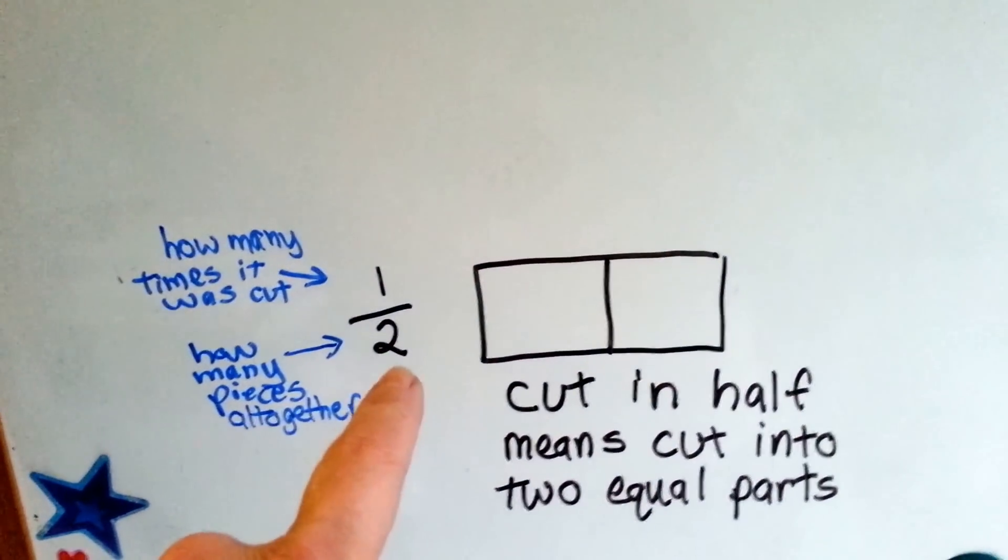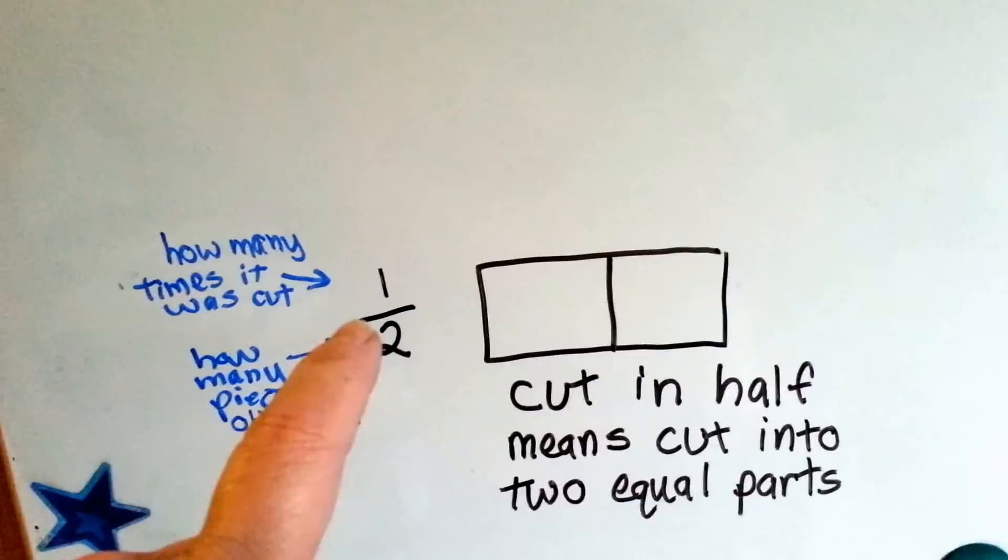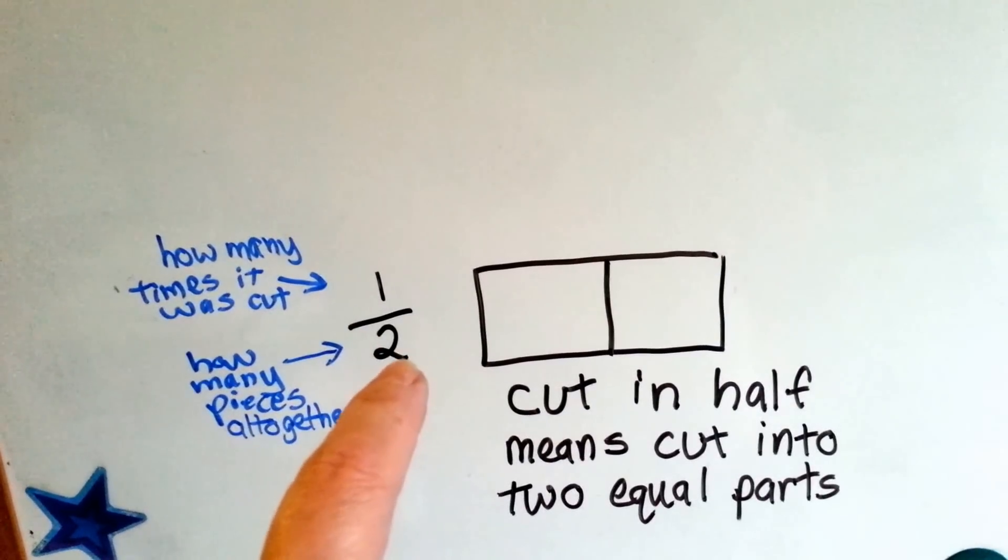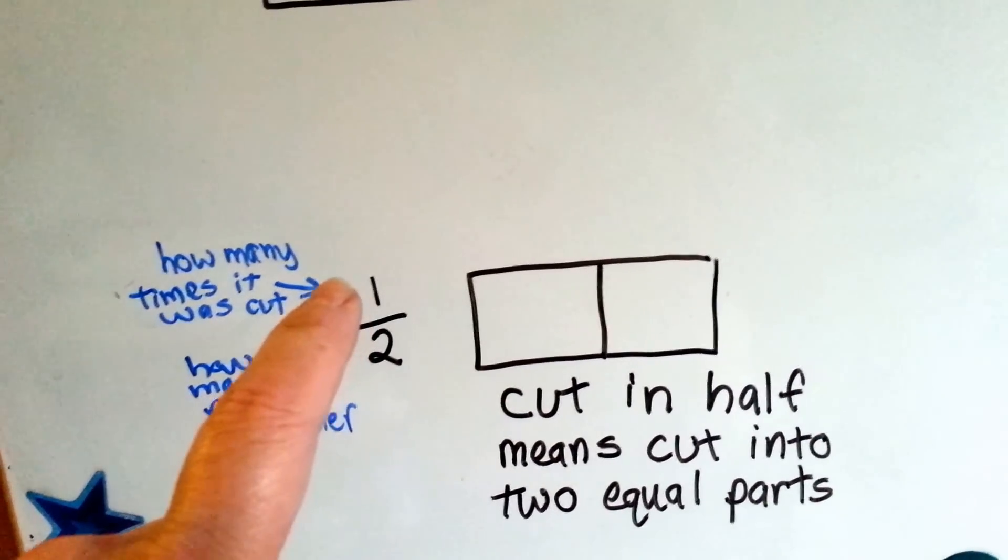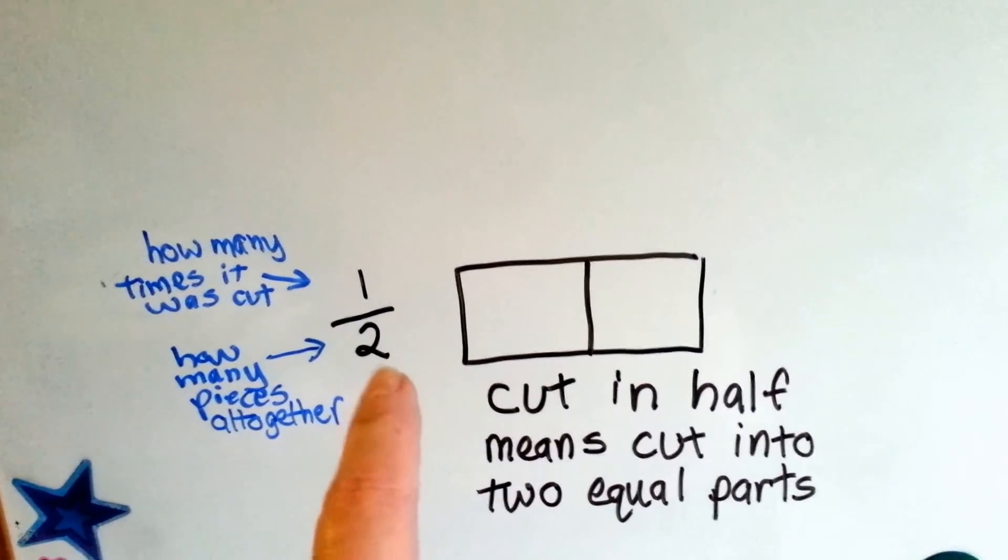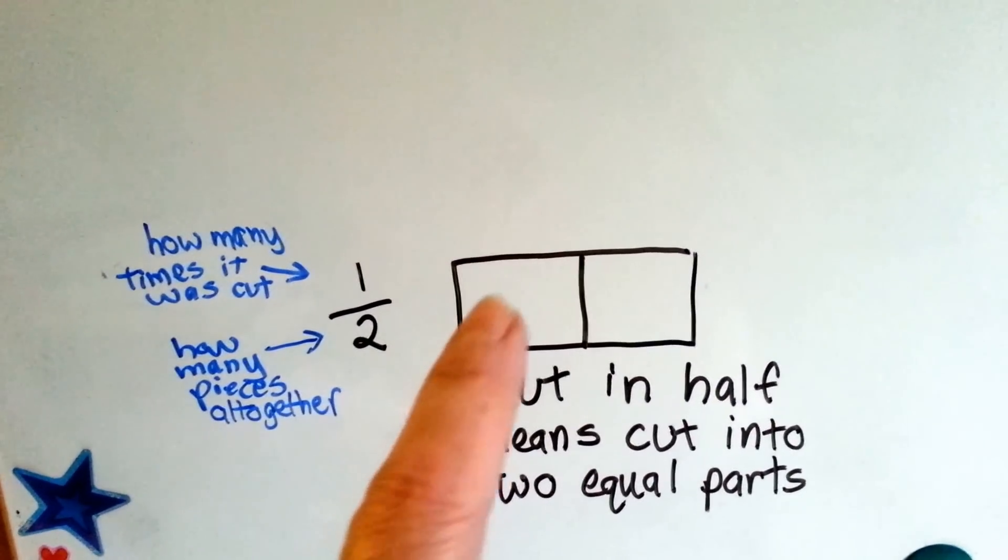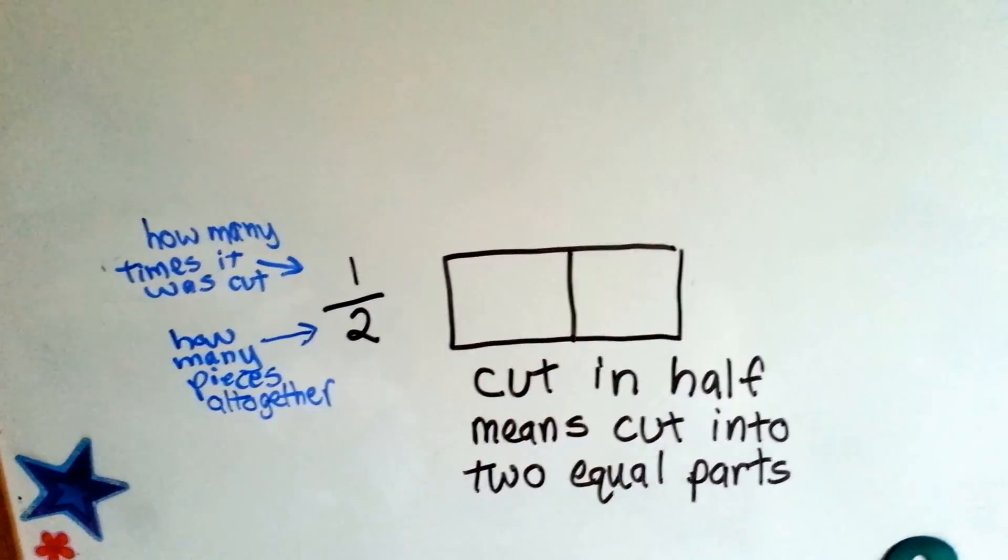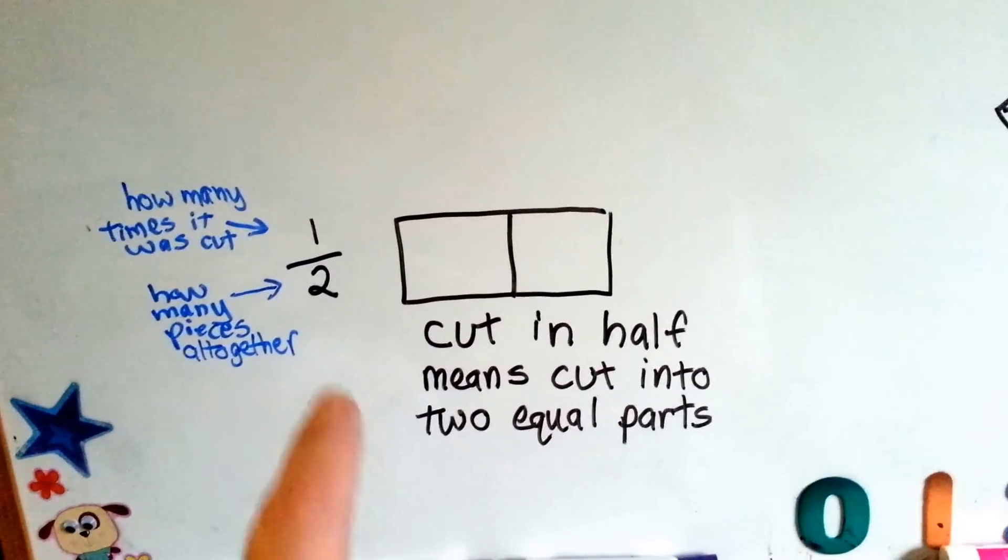This is how you write half. You write a one with a line and then a two underneath it. The one on top tells how many times it was cut, and the bottom number tells how many pieces there are all together. Cut in half means cut into two equal parts. That's how you write half.